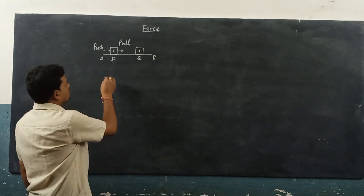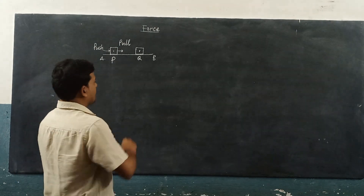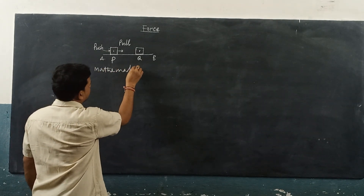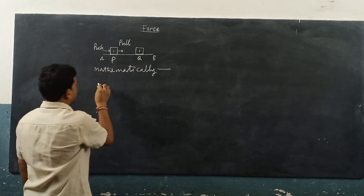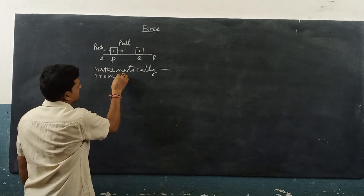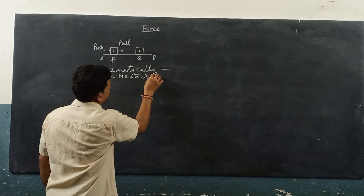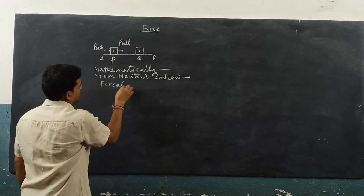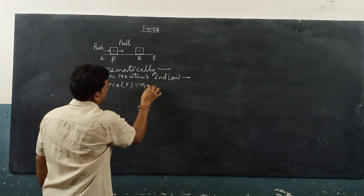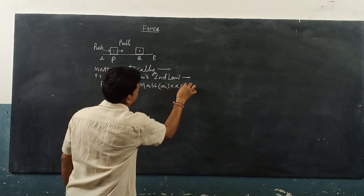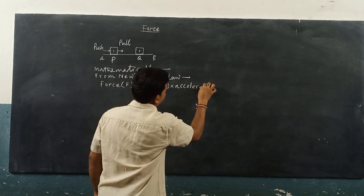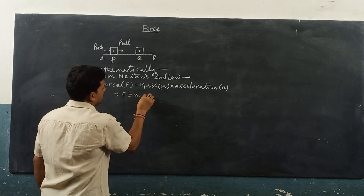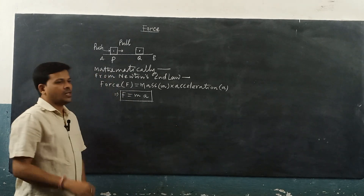Force can move a body from rest. Mathematically, from Newton's second law of motion, we can write force F equal to mass m into acceleration a — that is simply F = ma. This is the mathematical form of force.